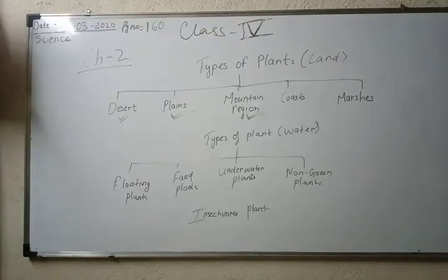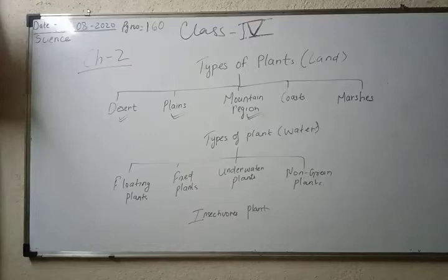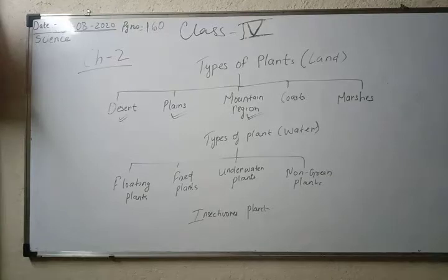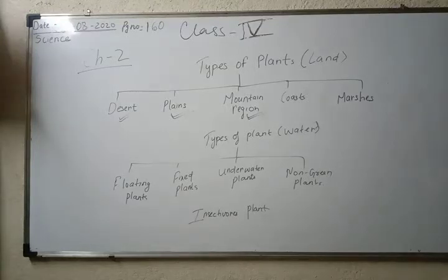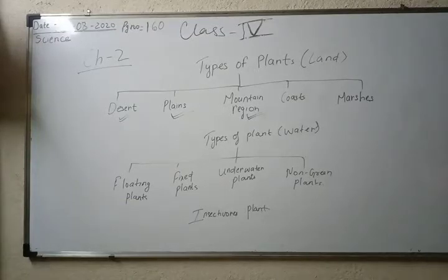Good morning class. Welcome to Saint Peter's School. This is your science class. In our previous class we were at chapter number 2, that is adaptation in plants. We covered the topics: what is adaptation, what is habitat, and what are the adaptations found in desert areas, plains, and mountain regions. Today we are going to start with plants found in coastal regions.